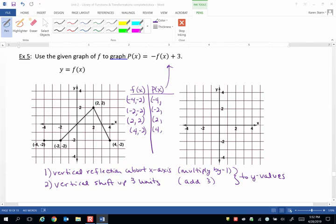So -2 times -1 is positive 2, plus 3 is 5. And then -2 times -1 plus 3 again is another 5. And then positive 2 times -1 is -2, plus 3 is positive 1. And then we have another -2, which times -1 is positive 2, plus 3 is 5 again.